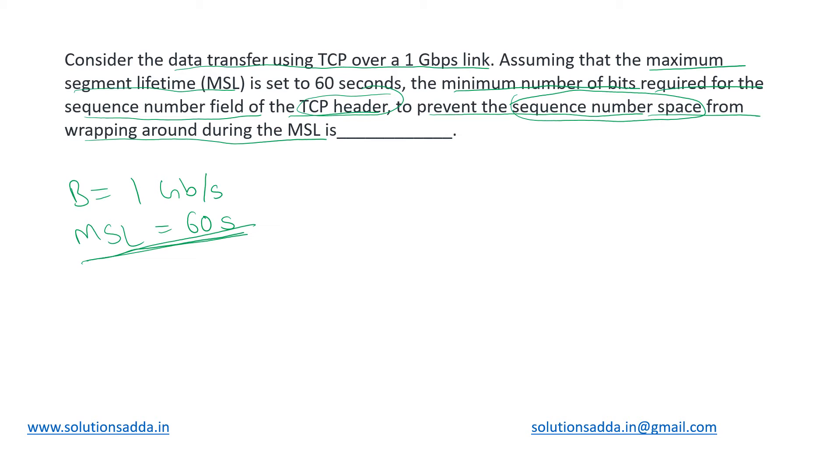It is saying that the bandwidth is 1 Gbps, which means in 1 second how much data are we generating? 1 Gbps. Let us convert this into 10 power 9 upon 8 bytes. So in 1 second these many bytes of data we are dealing with.